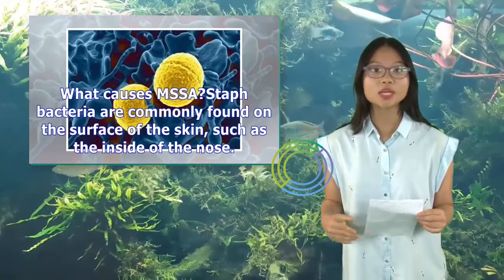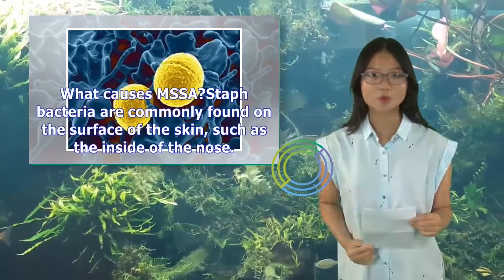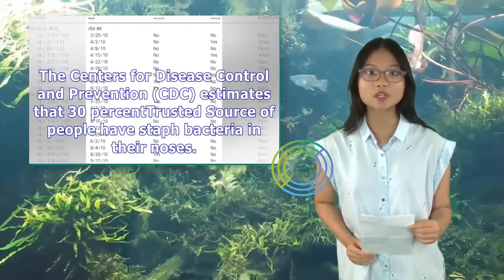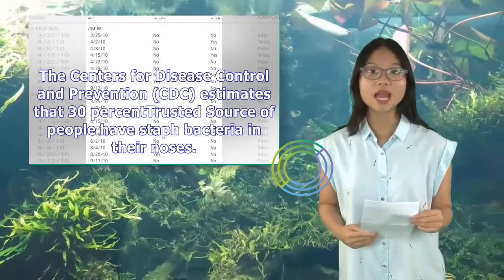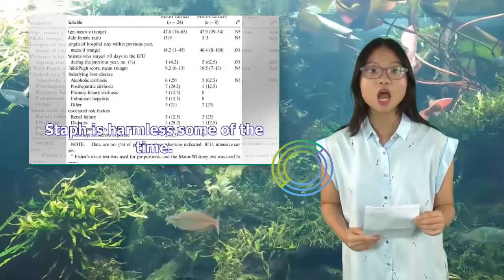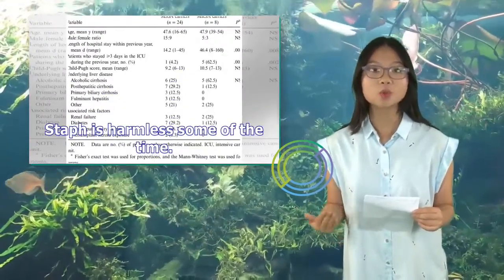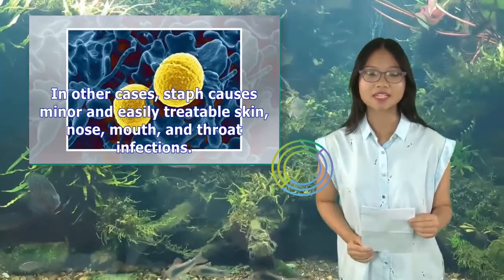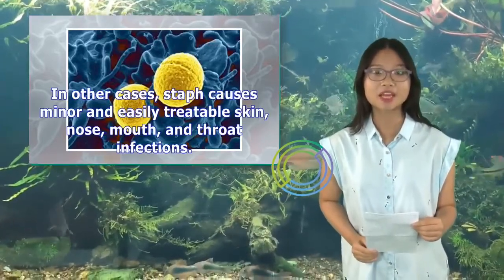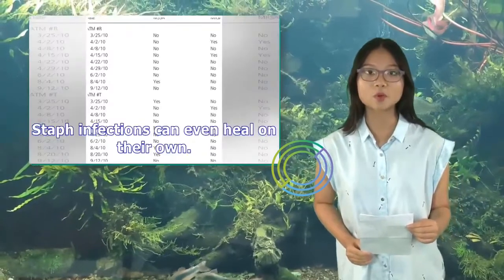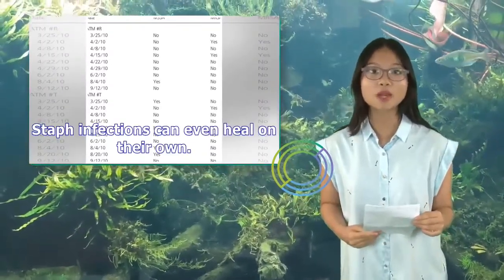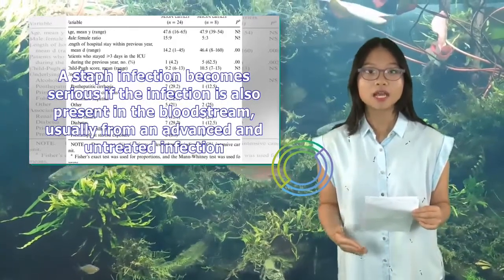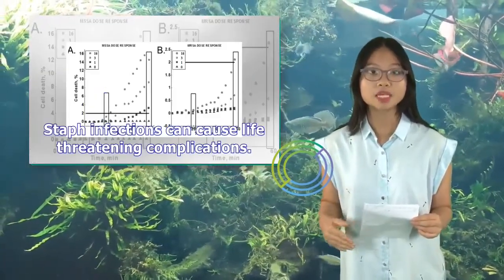Staph bacteria are commonly found on the surface of the skin, such as the inside of the nose. The Centers for Disease Control and Prevention, CDC, estimates that 30% of people have staph bacteria in their noses. Staph is harmless some of the time. It's possible to have it without showing any symptoms. In other cases, staph causes minor and easily treatable skin, nose, mouth, and throat infections. Staph infections can even heal on their own. A staph infection becomes serious if the infection is also present in the bloodstream, usually from an advanced and untreated infection. Staph infections can cause life-threatening complications.